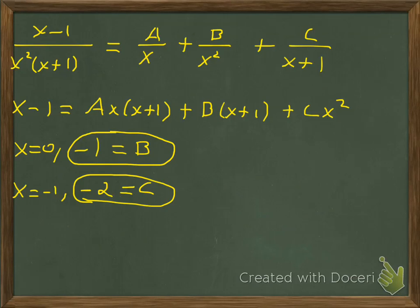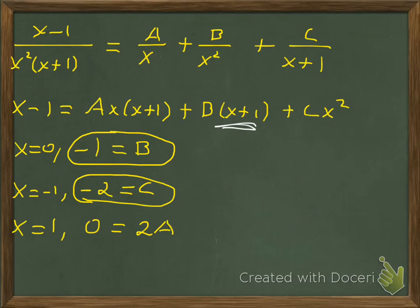For the last coefficient, we pick x equal to 1. The left-hand side is 1−1 = 0. The right side is A times 1 times 2 = 2A, plus B times (1+1) = 2B = 2(−1) = −2, plus C times 1² = C = −2. So 0 = 2A − 2 − 2, which means 2A = 4, so A equals 2.